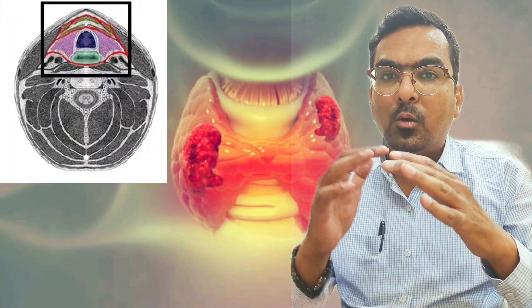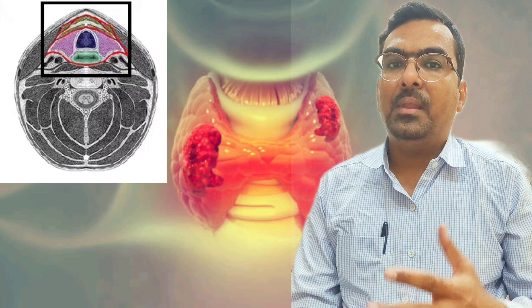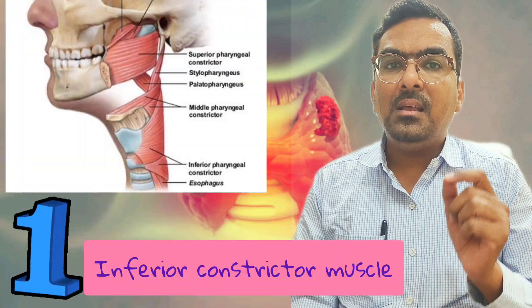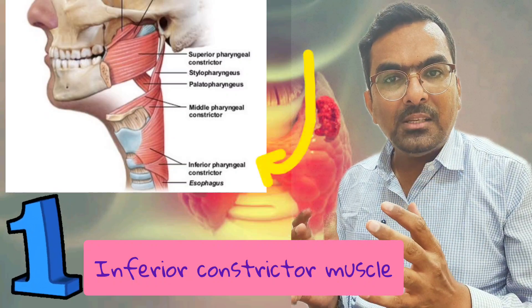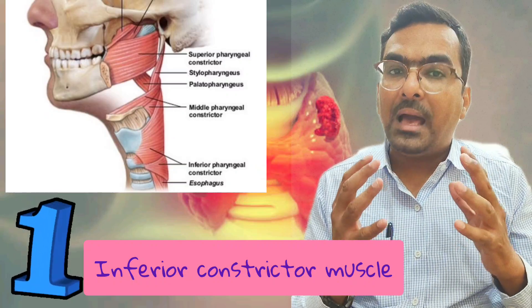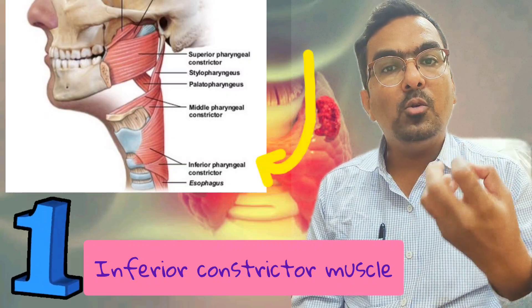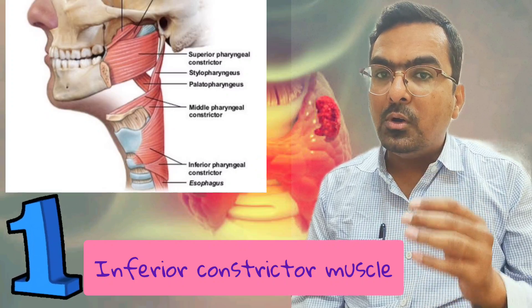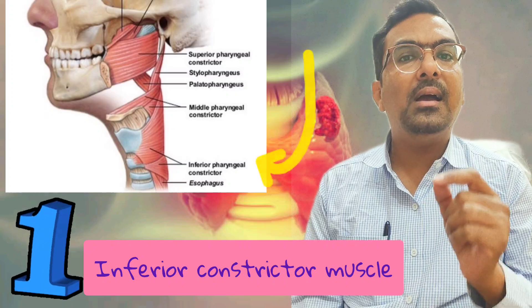The thyroid gland is enclosed by the pretracheal fascia, a layer of connective tissue with specific attachments. These attachments ensure that when the larynx and cricoid cartilage move during swallowing, the thyroid gland moves as well. The first reason is the inferior constrictor muscle, which has two parts: the cricopharyngeus and thyropharyngeus. When the thyropharyngeus moves up during deglutition, it moves the thyroid cartilage, causing the thyroid gland to move due to its attachment to the trachea and cricoid cartilage.